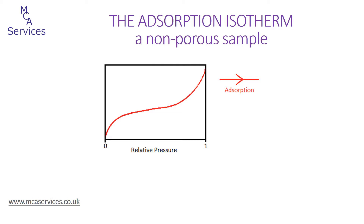The middle part of the isotherm shows only a very slight increase in adsorption volume as multi-layer adsorption occurs, before there's a sharp increase in volume as relative pressure approaches saturation — in the case of nitrogen adsorption this would be very close to 1. This increase in adsorption volume is due to the bulk condensation of the adsorbate.